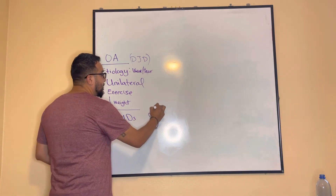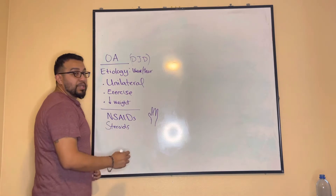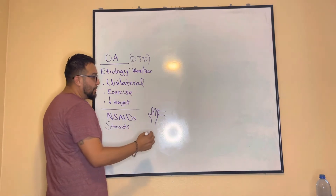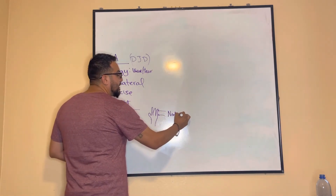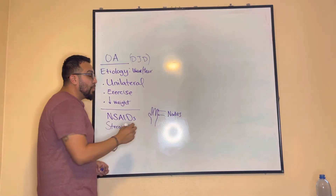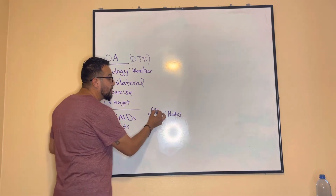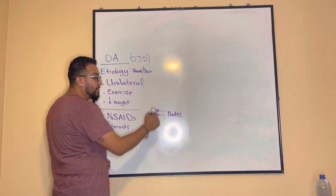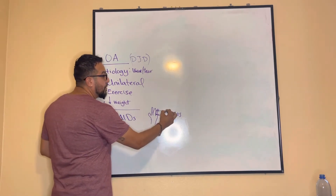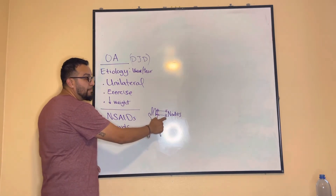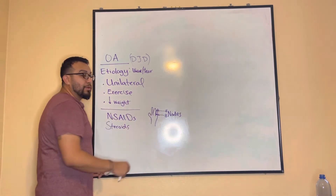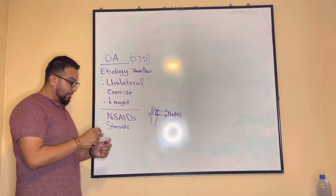In regards to data collection for OA, consider the fingers. The joints of the phalanges — both the proximal and the distal joints — may develop nodes from continuous articulation. The proximal ones are known as Bouchard nodes, and the distal ones are known as Heberden nodes. Remember: B comes before H, just as your proximal joint comes before your distal. That's how you know those nodes are specific to osteoarthritis.